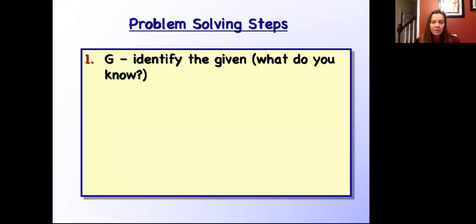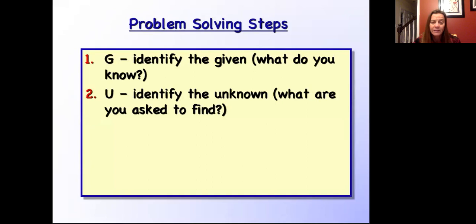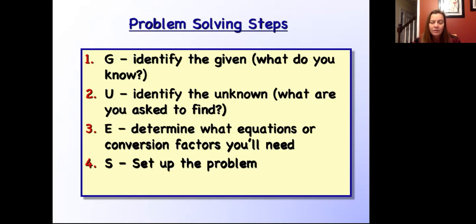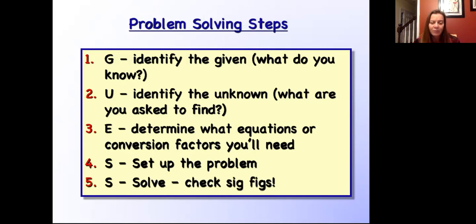First, we identify the Given — what do we know, what does the problem give us? Then U, we identify the Unknown — what we're being asked to find. For E, we determine what equations or conversion factors we'll need, and since this is stoichiometry, it's going to be almost all conversion factors. S, we set up our problem showing our work including units. And for our second S, we solve the problem, making sure to check our significant figures.